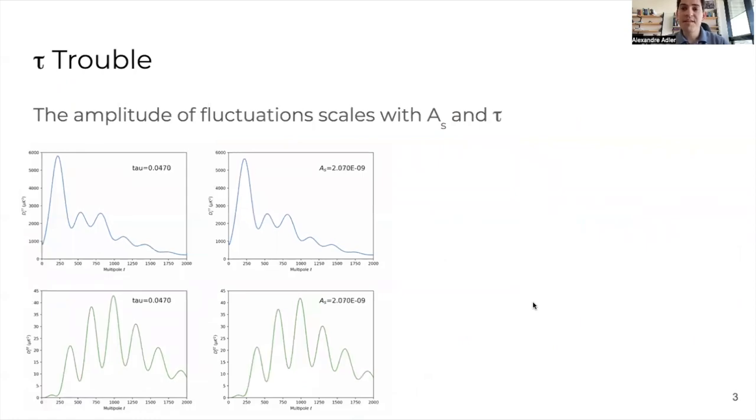The various parameters of lambda CDM affect the CMB two-point correlation function, or the power spectrum, in different ways. Tau and the amplitude of scalar perturbation modes both change the global amplitude of the CMB peaks. If you increase the optical depth to ionization, your anisotropies will get re-scattered, and that will homogenize the universe after CMB time. Same thing, if you have less amplitude of perturbation in the beginning, you will get less amplitude in the power spectrum.